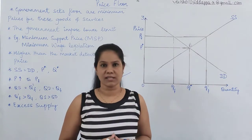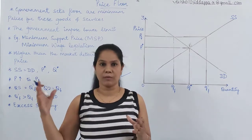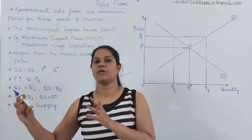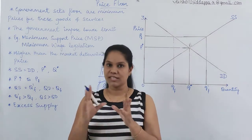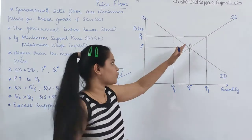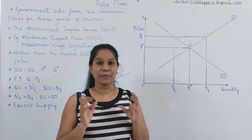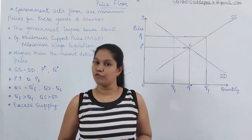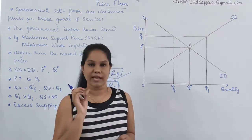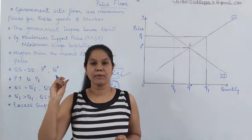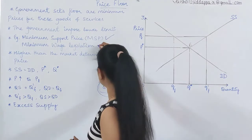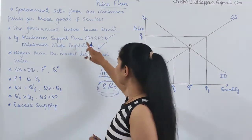MSP is quite discussed every time in the newspapers — minimum support price. We read it as MSP. This is the concept: when any price is fixed in the market, because of supply and demand that price is really low, the farmer cannot bear it, so the government is going to fix it higher. That's called minimum support price. On the other side, you have the next theory — minimum wage legislation.